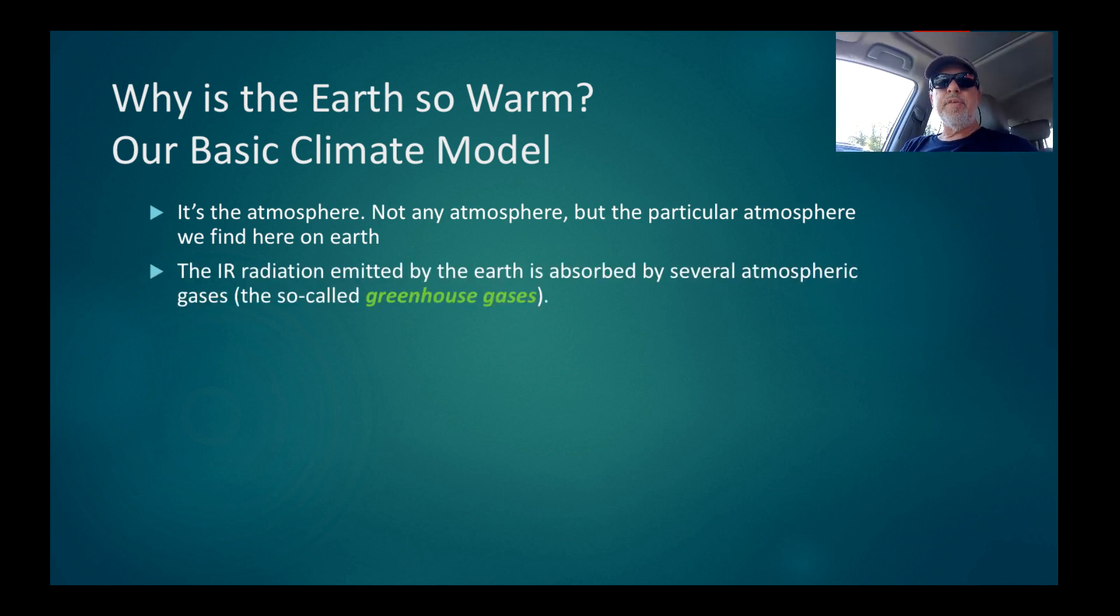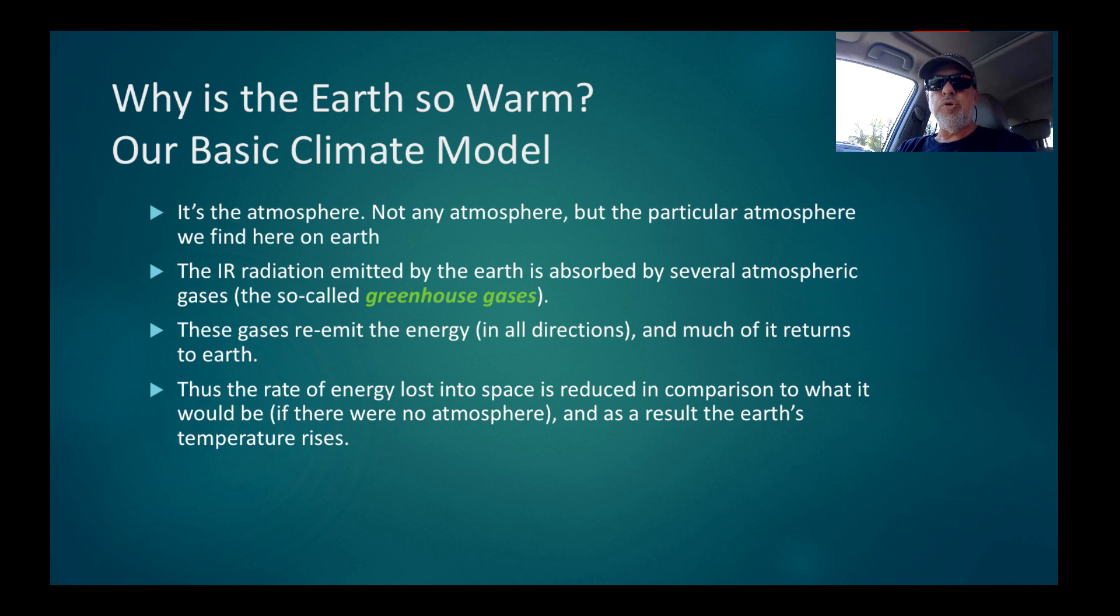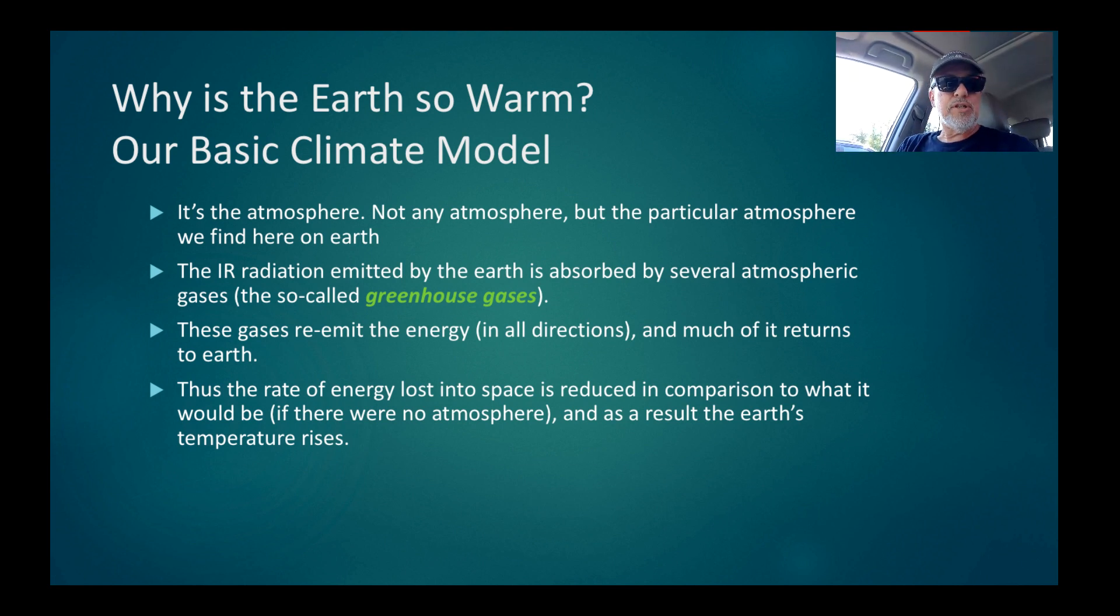The infrared radiation emitted by the Earth is absorbed by several atmospheric gases, the so-called famous greenhouse gases. What these gases do is they re-emit energy that they absorb in all directions so that much of it then returns to Earth. The Earth will absorb it and then re-emit it, but then the greenhouse gases are there to catch about 50% of it again and send it back to Earth. Thus, the rate of energy lost into space now is reduced in comparison to what it would be if there was no atmosphere. As a result, the Earth's temperature rises. That's an ecosystem service.